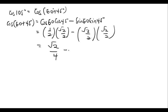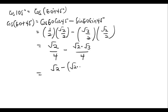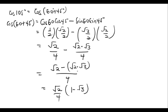Simplifying: (1/2)(√2/2) = √2/4, and (√3/2)(√2/2) = √6/4. So we get √2/4 − √6/4. Factoring out √2 gives √2(1 − √3)/4. This is the surd form answer for cos 105°.